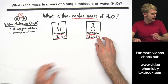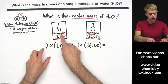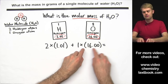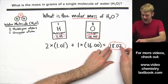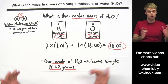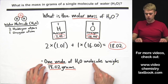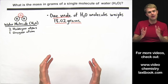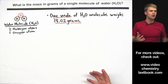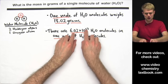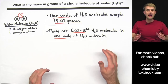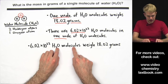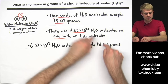Here's the molar mass of hydrogen and here's the molar mass of oxygen, and we're going to add them up. There are two hydrogen atoms in water, so we do two times the molar mass of hydrogen, and there's one oxygen atom so we do one times the molar mass of oxygen. We add this up and get 18.02, which tells us the molar mass — one mole of H₂O molecules weighs 18.02 grams. We also know that one mole contains 6.02 times 10 to the 23rd H₂O molecules.